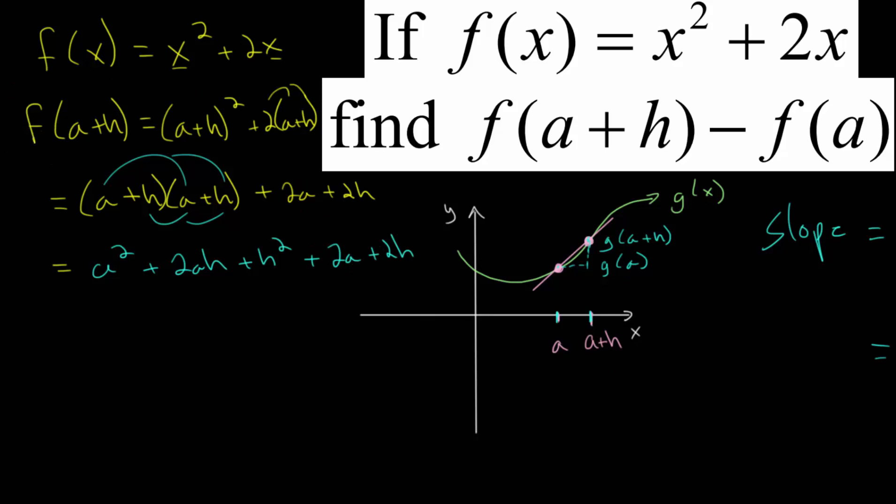Now that is f of a plus h, but we also need f of a. We just plug in a anywhere we see an x, we get a squared plus 2a. And now we can actually find that difference. So let's do f of a plus h minus f of a. We have a squared plus 2ah. So let me just rewrite everything, and then we can actually carry out the subtraction. And then we're subtracting this entire quantity. So you can put it in parentheses and subtract it, or you can just distribute the negative to both of these so that we get minus a squared minus 2a.